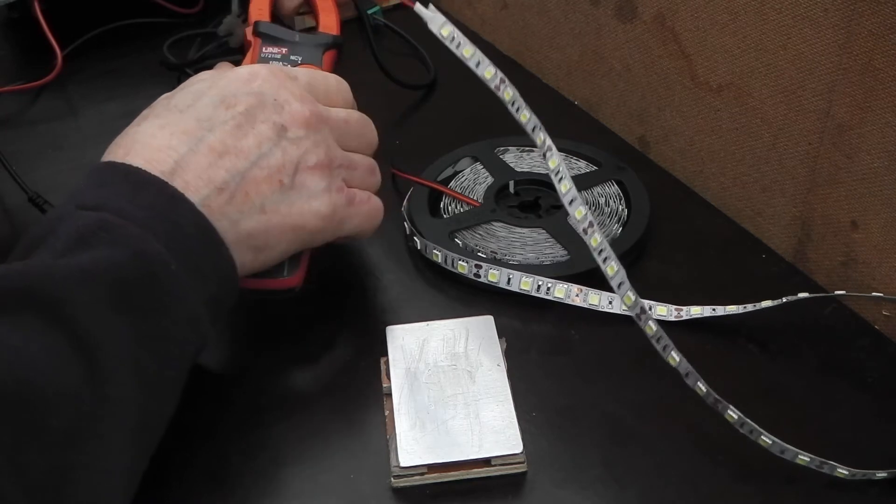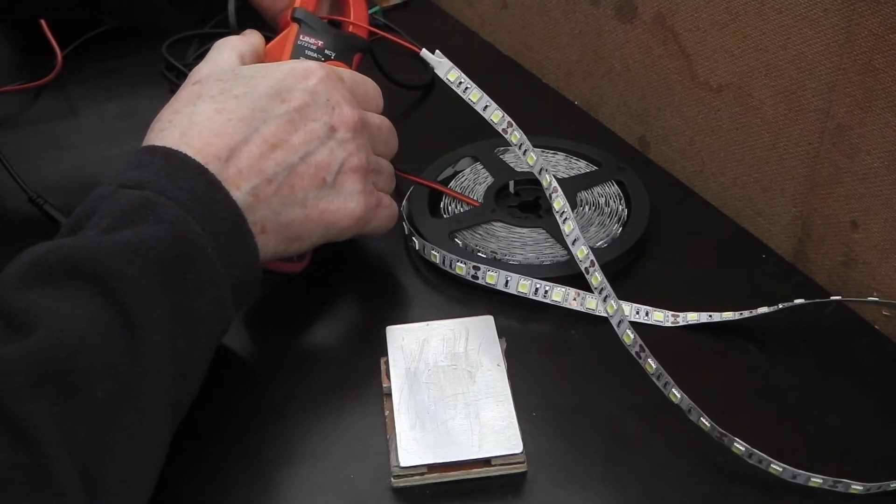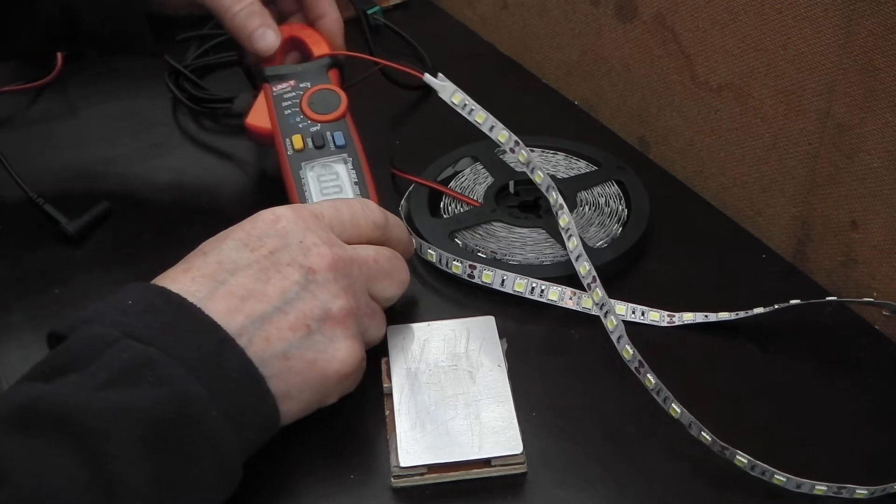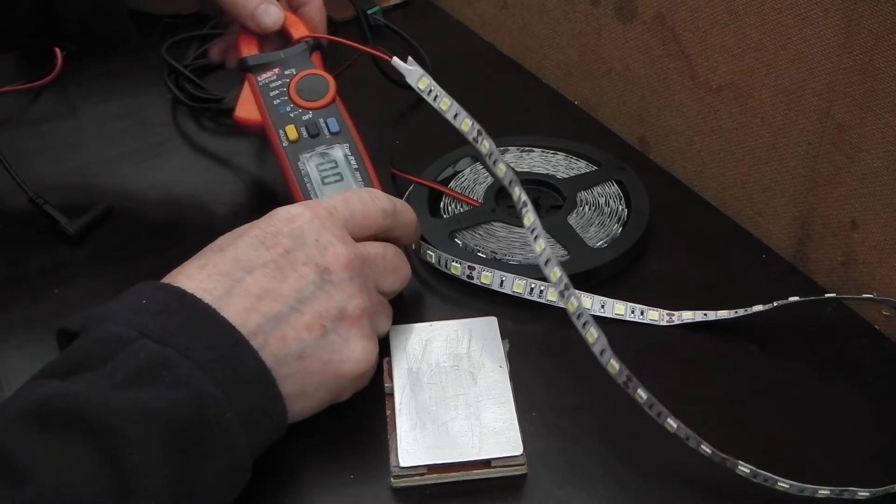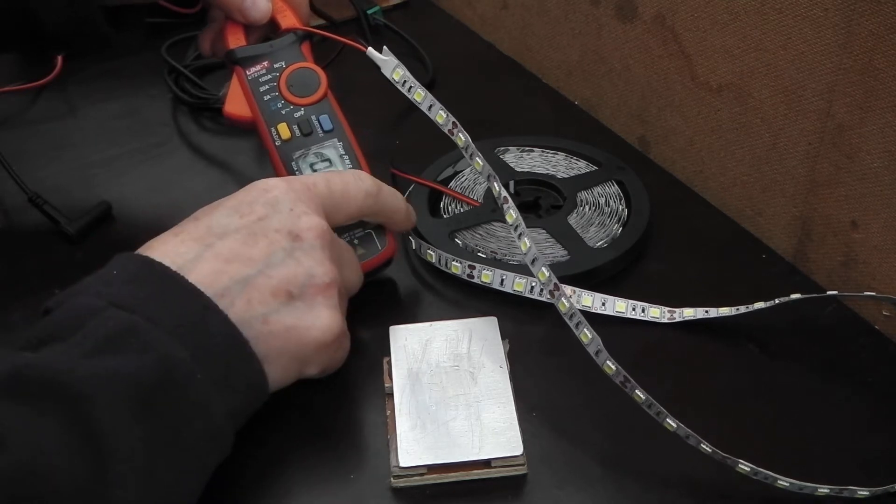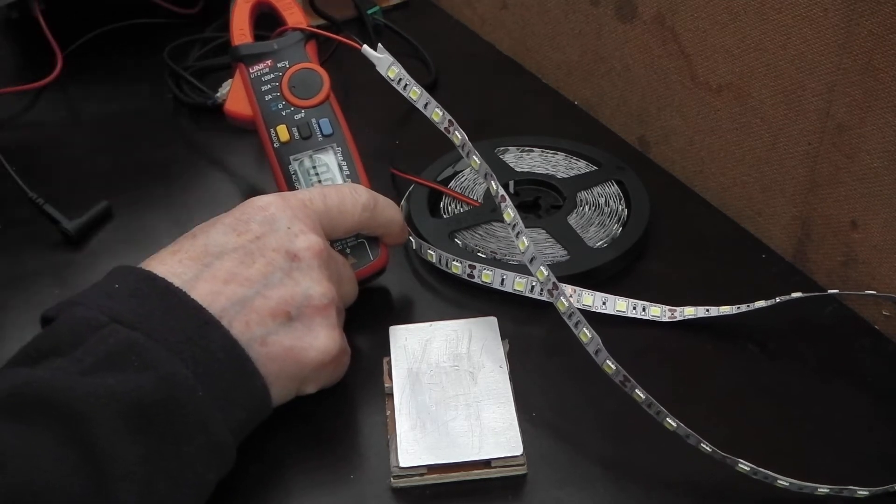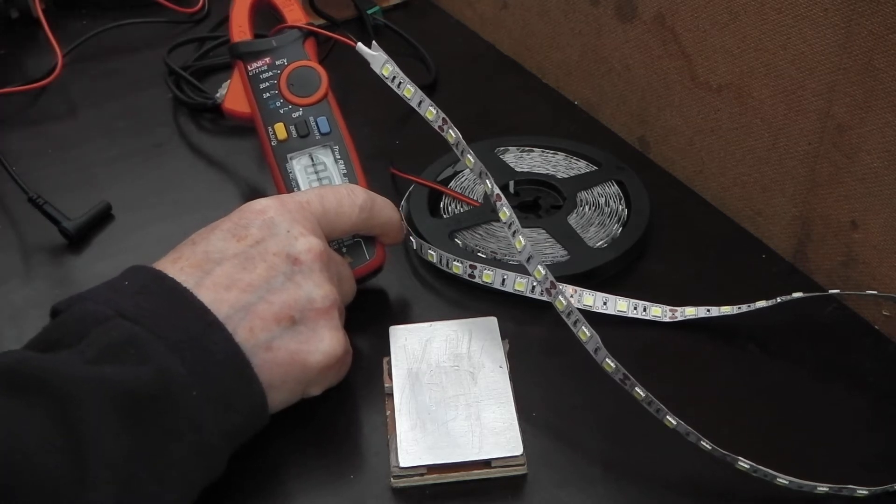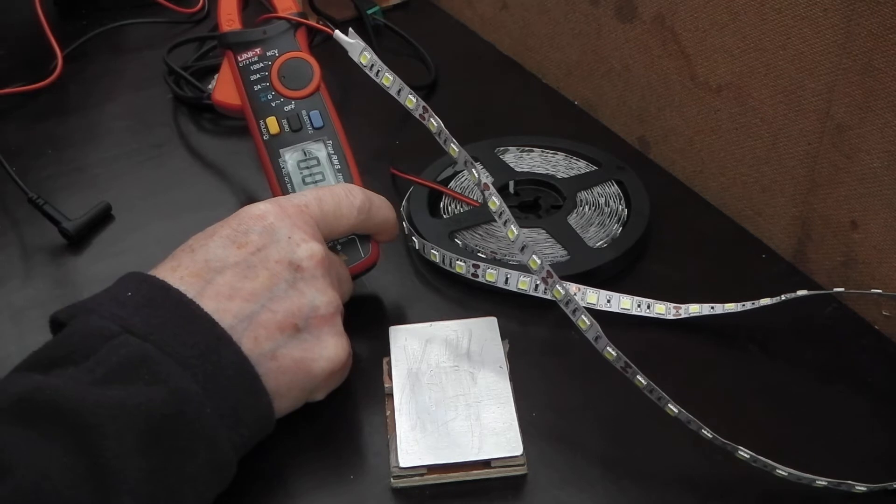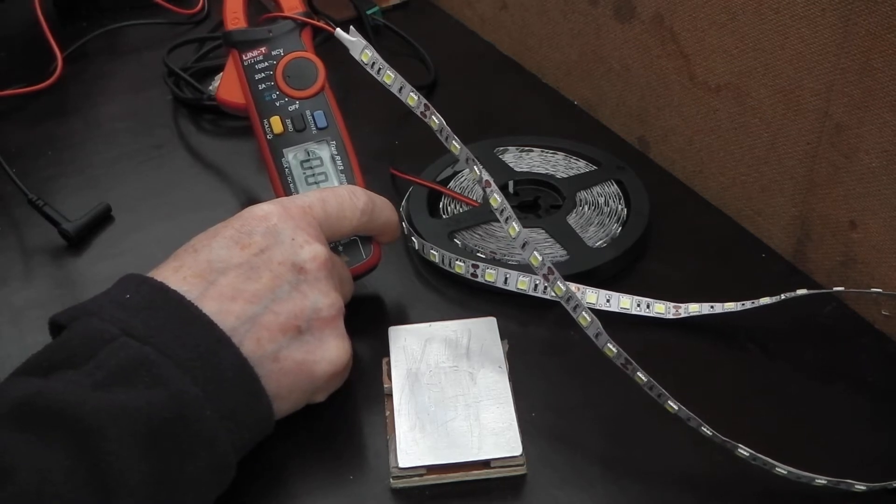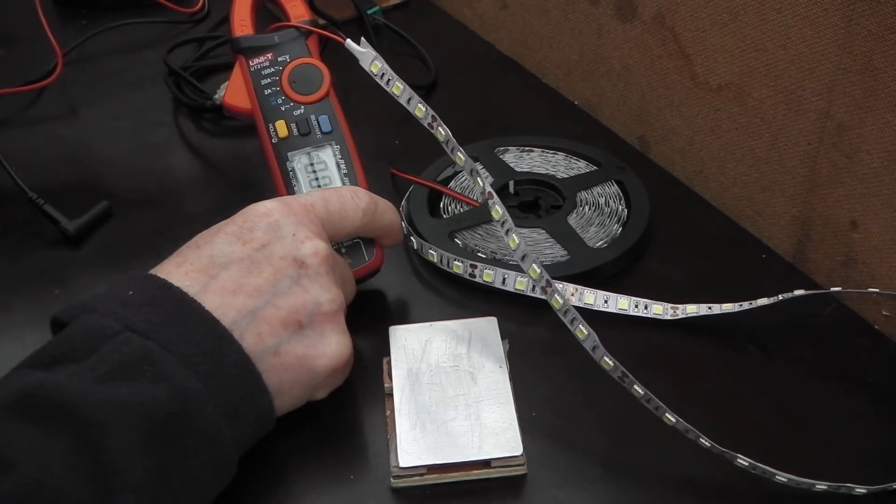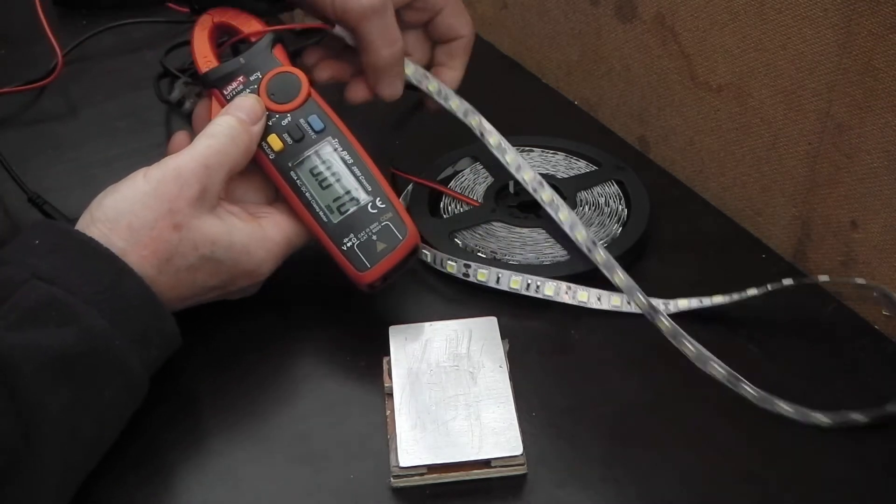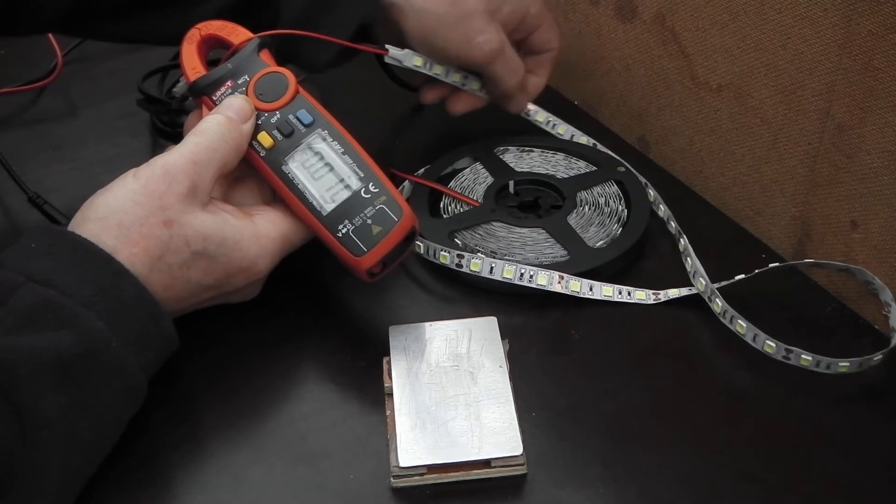Then put the clamp carefully over the wire. That's showing 17 milliamp because it is plugged into my transformer. Switch it on a bit more. Try and get that out of the way.